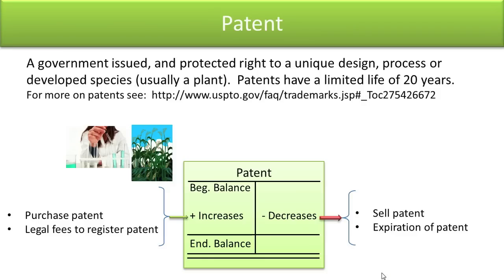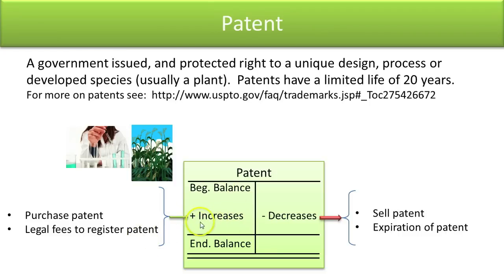A patent is a government-issued and protected right to a unique design, process, or developed species — like a hybrid plant you genetically design — and lasts for 20 years. If you purchase a patent from another company, your patents account goes up. Legal fees to register your own patent are also an asset with a 20-year benefit. The patent account decreases if you sell a patent or if the patent expires.